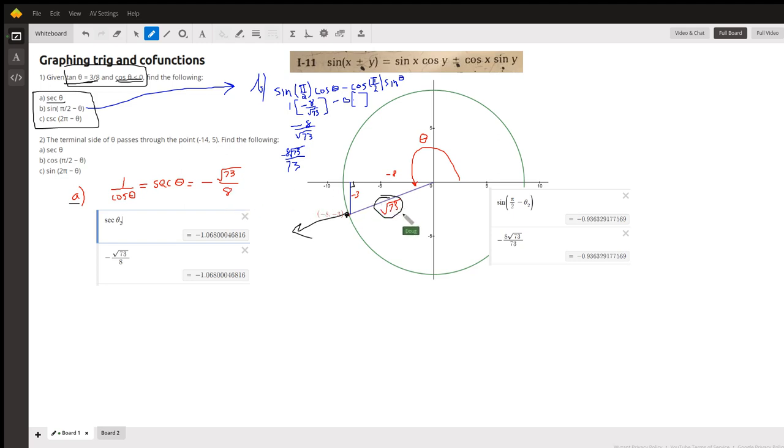So the secant of theta is the reciprocal of cosine. We'll put the hypotenuse over the adjacent side: negative radical 73 over 8. Here's proof - I take the secant of theta using the Desmos online graphing calculator, here I get this value, and you can see that the square root of 73 over 8 is the same.